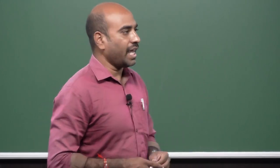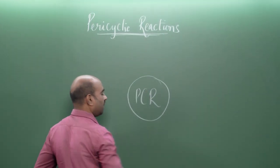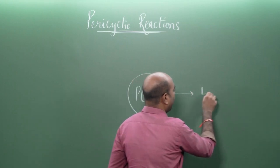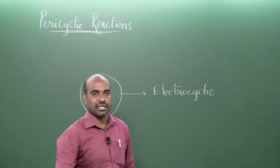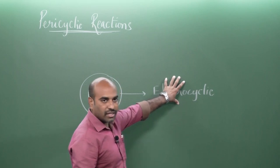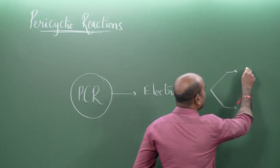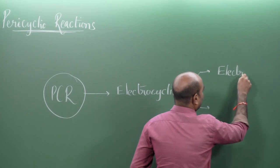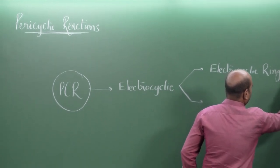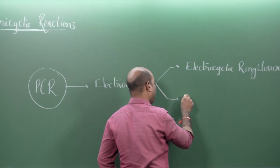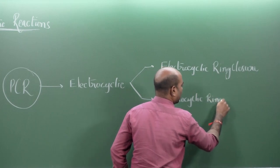Pericyclic reactions are classified into 5 types. The first is electrocyclic reactions. Since pericyclic reactions are reversible, electrocyclic reactions may be of two types: electrocyclic ring-opening reactions and electrocyclic ring-closure reactions.